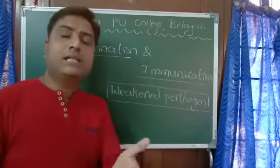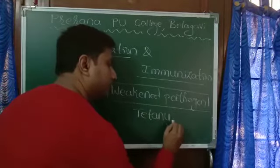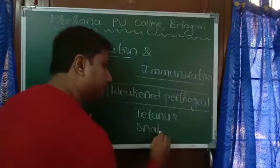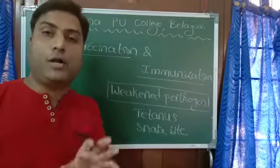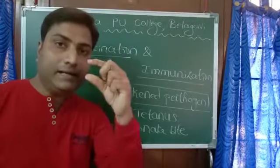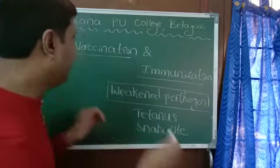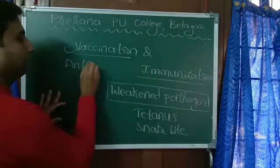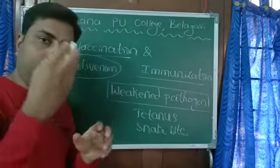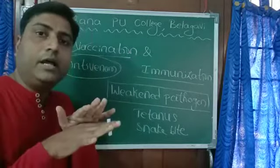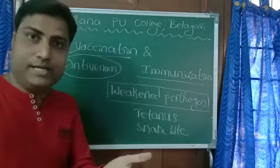Sometimes, as in the case of tetanus or snake bite, preformed antibodies — antibodies that are already formed — are given in the form of an injection. In the case of snake bite, we call it antivenom. That particular antibody neutralizes the effect of the venom. This is called passive immunity.